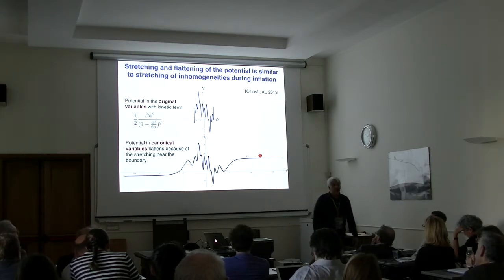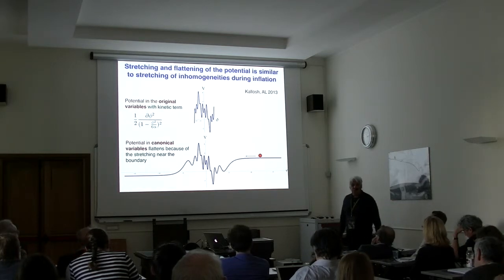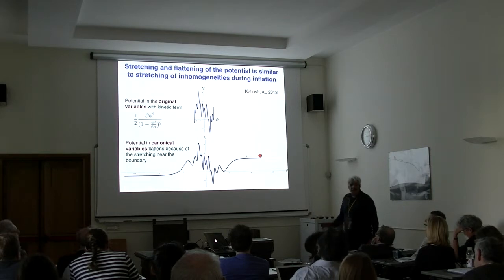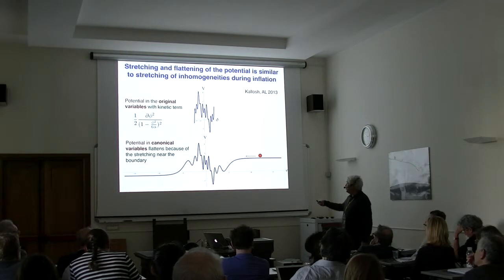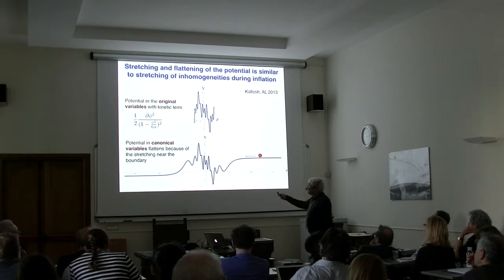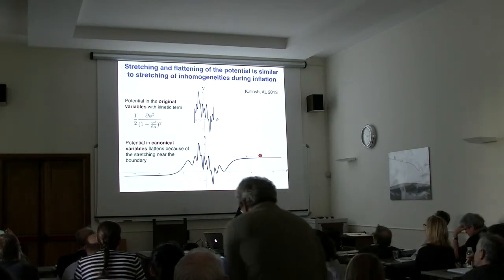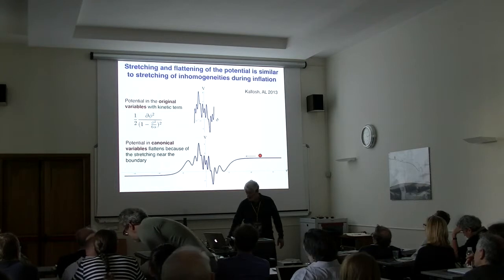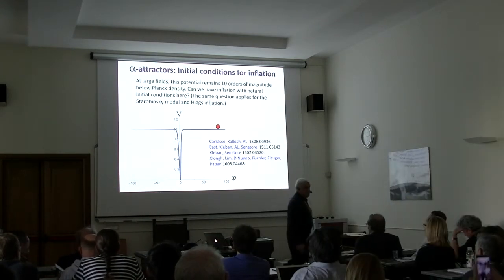If the potential approaches zero, it gives dark energy — requiring the usual 10^-120 fine tuning, but possible. If it is nonzero you get inflation, and the predictions do not depend on the potential details. This is something we absolutely did not expect. Now let's discuss the problem of initial conditions for this model, because this is a very strange situation I myself did not expect.